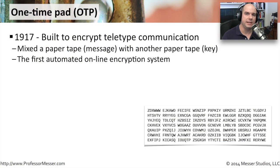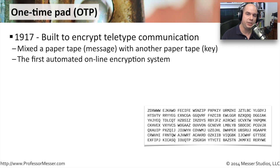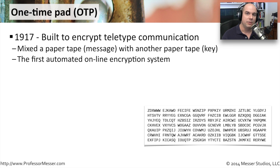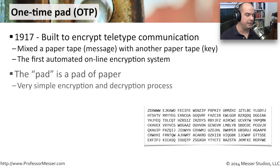A one-time pad is a cipher created in the early 1900s, built when teletype machines were first becoming popular as a way to encrypt teletype communications. It was an automated system done on pieces of paper going into and coming out of a teletype, and it had a very interesting effect — enabling private messages to go back and forth between one place and another.